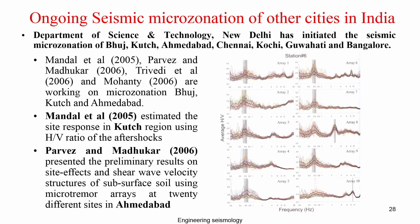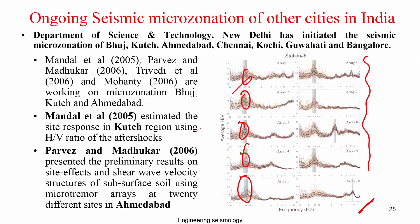There are many other people who carried out microzonation component studies and claimed them as full microzonation of a particular place or city. For example, Mandal, Parves, Madhukar, Trivedi, and Mohanty worked on Bhuj, Kutch, and Ahmedabad, estimating H/V ratio and mapping predominant frequency, which they also called microzonation. Parves and Madhukar presented preliminary results of site effect and shear wave velocity using microtremor arrays at 20 sites in Ahmedabad, producing and mapping predominant frequency.